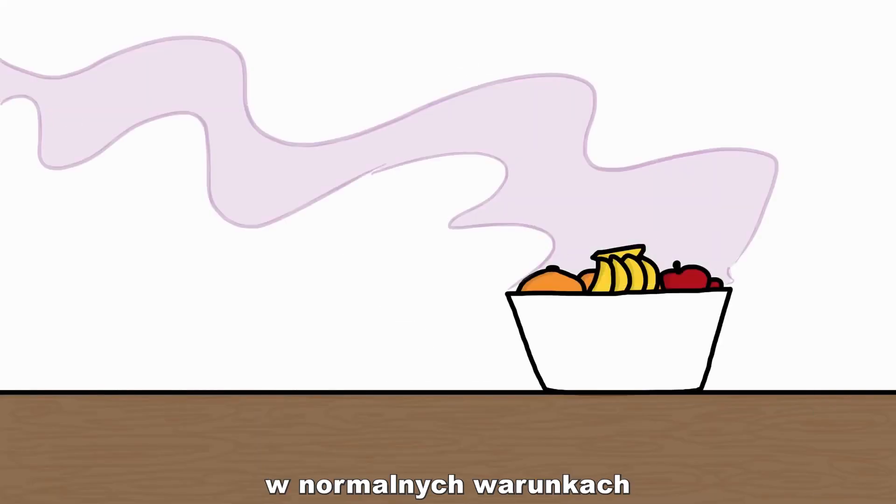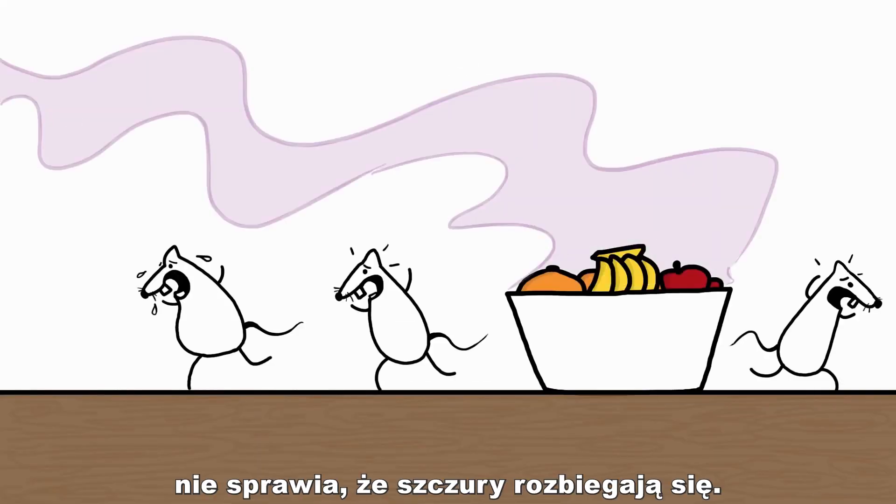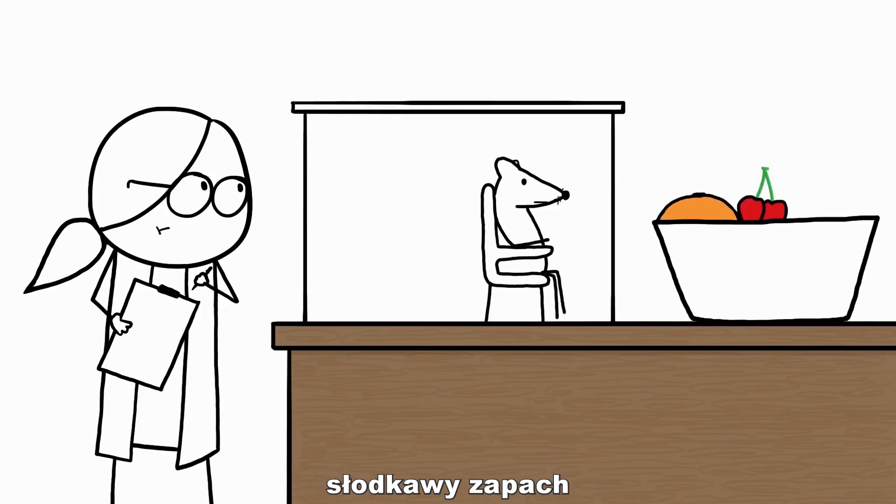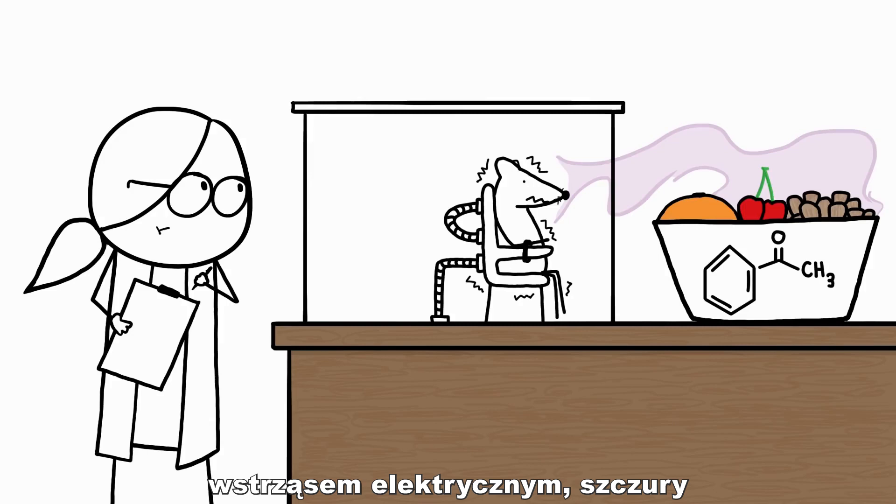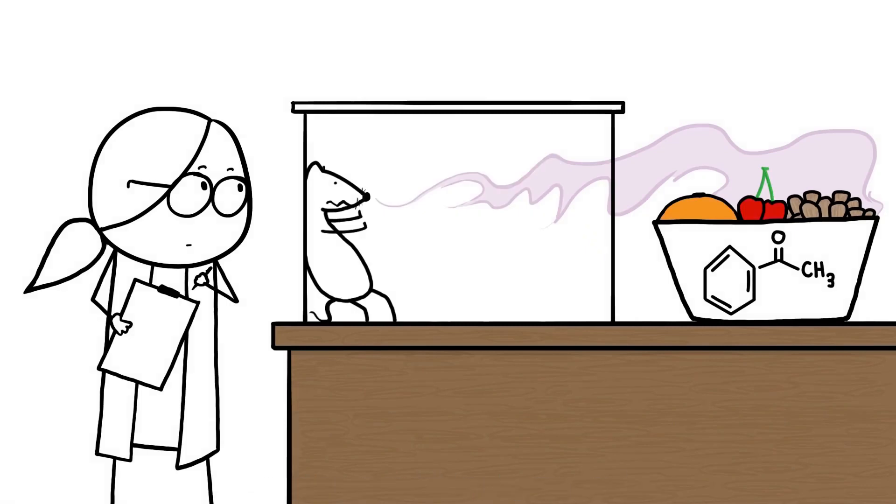The sweet smell of fruit doesn't normally send rats running, but when researchers paired the orange cherry almondy scent of the chemical acetophenone with a painful electric shock, lab rats quickly learned to fear it.